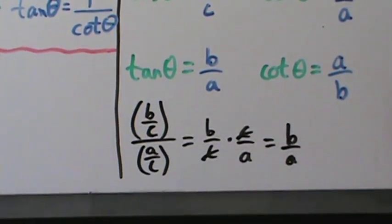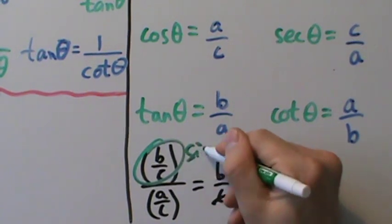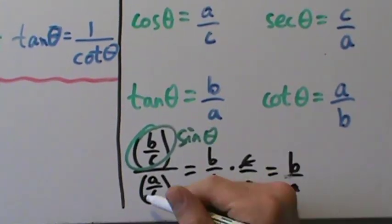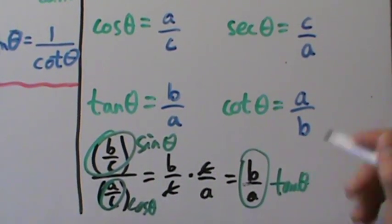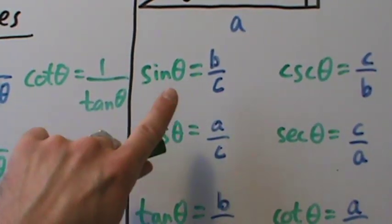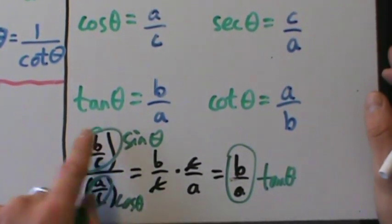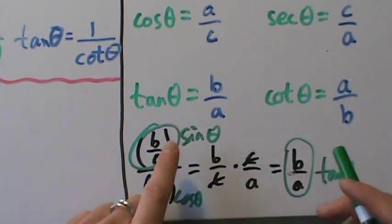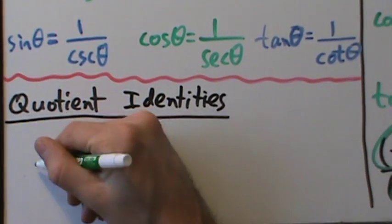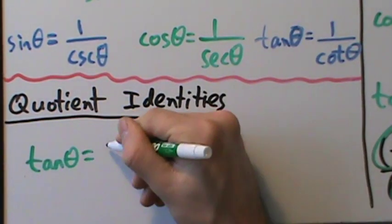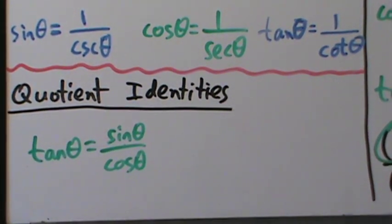What did we start with? B over C on top — that's the sine of theta — and A over C on the bottom, which is the cosine of theta. And we ended up with B over A, the tangent of theta. So sine of theta divided by cosine of theta equals the tangent of theta. That's our first quotient identity: tangent of theta equals sine of theta divided by the cosine of theta.